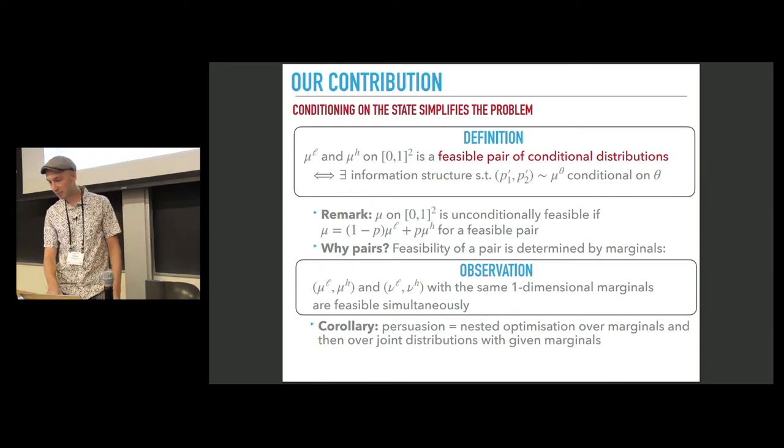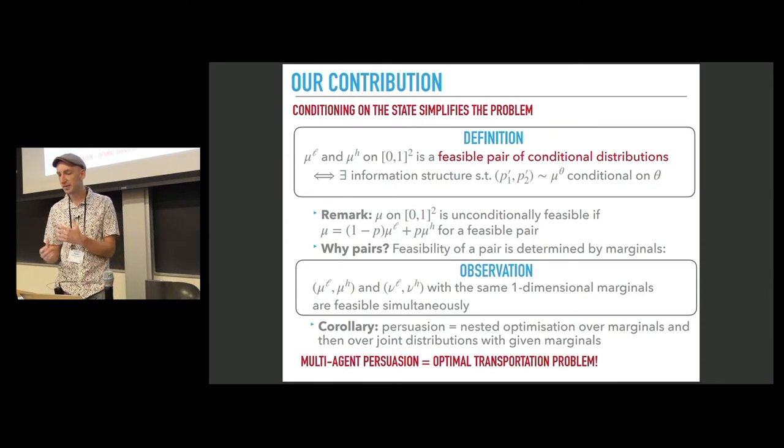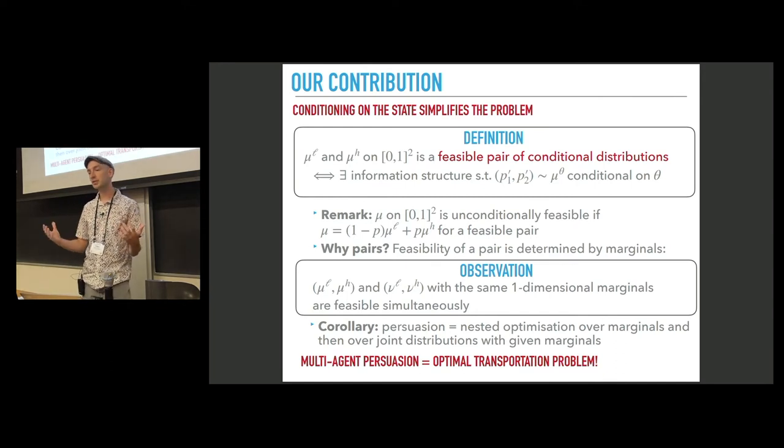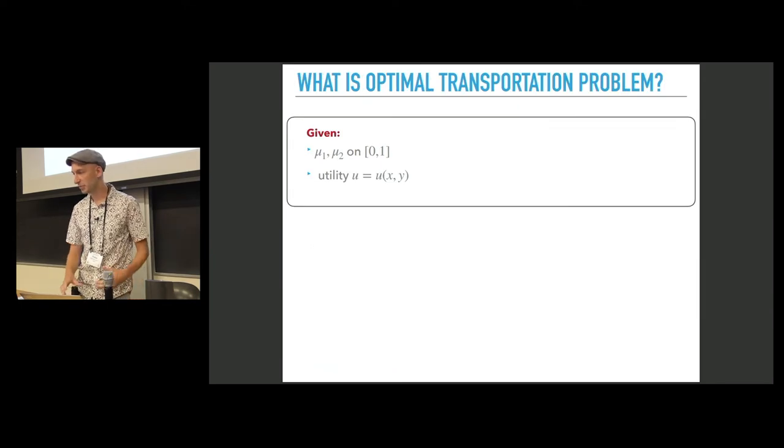This decomposition shows that multi-agent persuasion is related to an optimal transportation problem. Let me remind you what I mean by an optimal transportation problem. In this problem, we're given two distributions on 0,1, one-dimensional distributions and the utility function that depends on two variables, x and y.